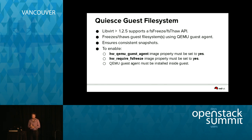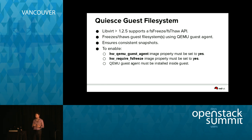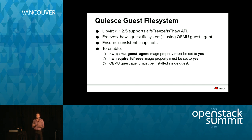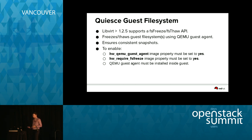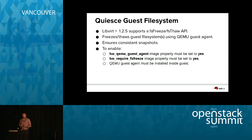That wraps up the performance features — I've also started a series of blog posts covering these in more expanded detail. Moving on to more general driver features in the Kilo release: LibVirt 1.25 and higher supports the use of something recently added to the QEMU guest agent — a freeze/thaw API. This means I can tell the guest to freeze the filesystem so I can take a consistent snapshot, and when I'm done snapshotting I can thaw it again to allow the guest to start modifying the disk. This is very useful for ensuring consistent snapshots.